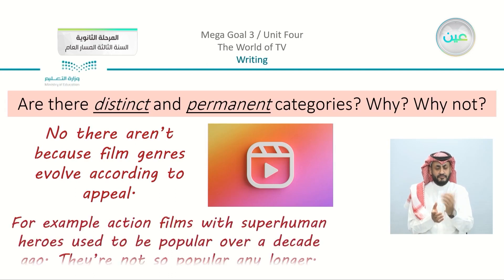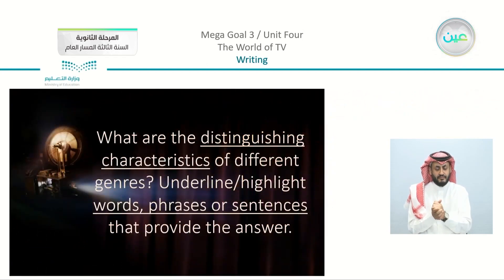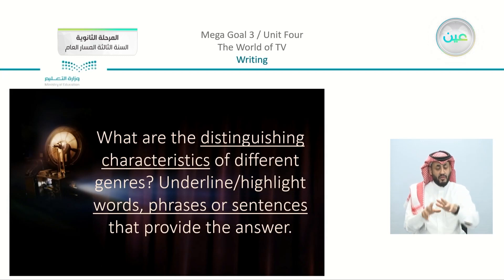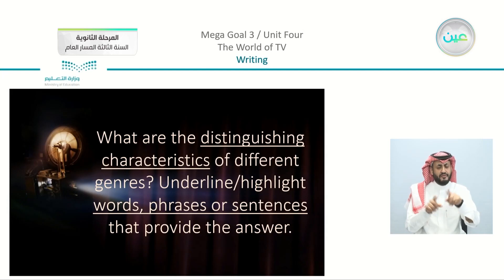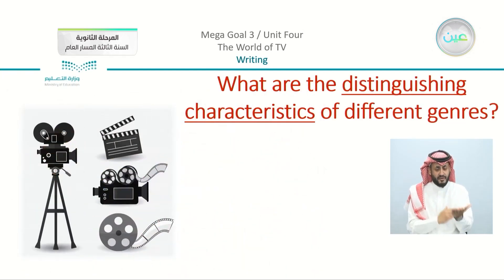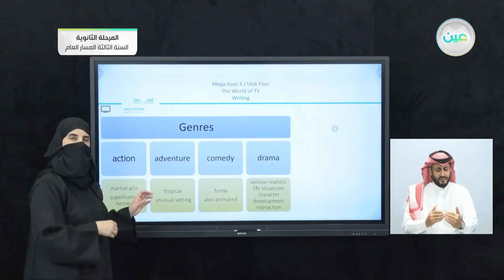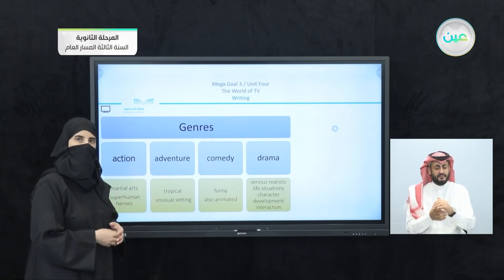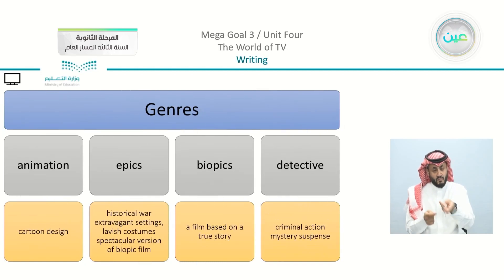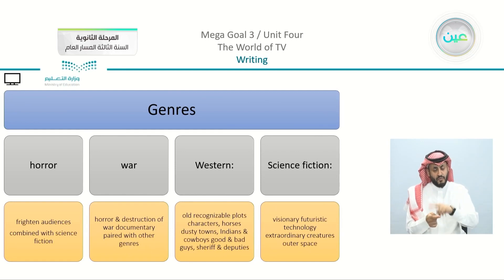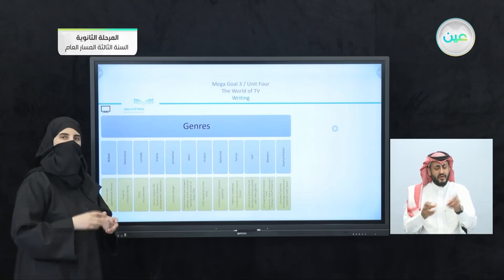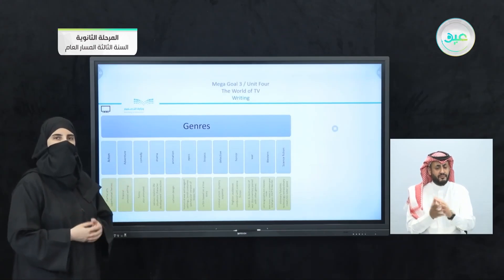We have the question: what are the distinguishing characteristics of different genres — underlying highlight words, phrases, or sentences? This was the main part we did in our last lesson when we listened and read about these different genres and their categories. We also listed some of the characteristics of each kind. We had a table with different types or genres and the elements of each genre, covering all the different types we listened to in the last lesson.